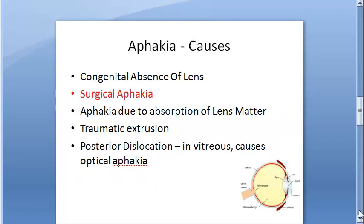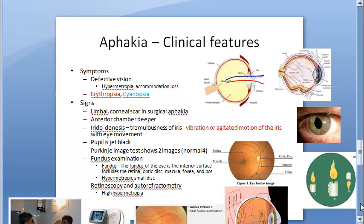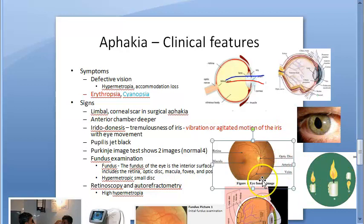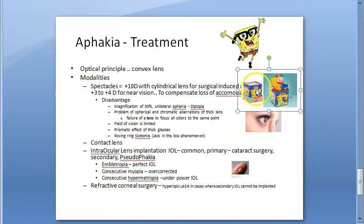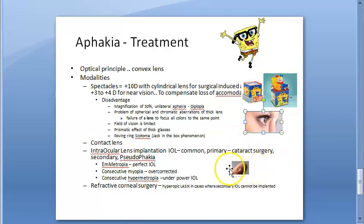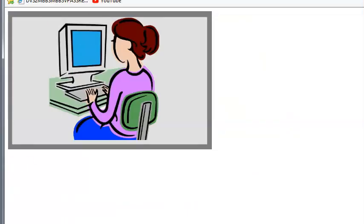Quick recap: Aphakia is absence of the crystalline lens from the pupillary area causing hypermetropia. Causes: congenital, surgical, absorption of lens matter, traumatic extrusion, posterior dislocation. Optics: total power reduced, focal points increased, accommodation fully lost. Signs: limbal/corneal scar, deep anterior chamber, iridodonesis, jet black pupil, two Purkinje images, hypermetropic small disc, high hypermetropia on retinoscopy. Treatment: spectacles (with prismatic effect/roving ring scotoma/jack-in-the-box phenomena as disadvantages), contact lens, IOL implantation, and refractive corneal surgery.